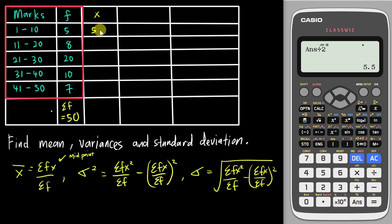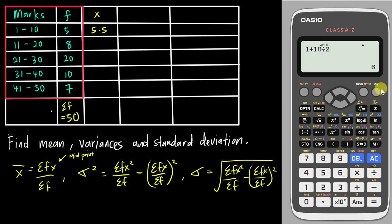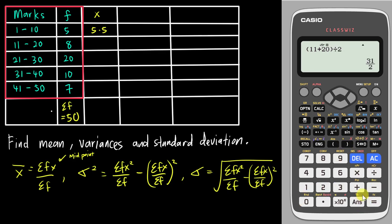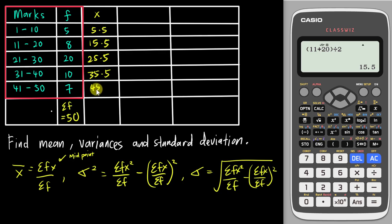An important tip: you cannot type 1 plus 10 divided by 2 directly, because the calculator performs division first and then addition, giving you 6 instead of 5.5. You must put brackets: (1 plus 10) divided by 2, or use the fraction input 1 plus 10 over 2. For the next interval, (11 plus 20) divided by 2 gives 15.5. Following the same pattern: 25.5, 35.5, and 45.5.